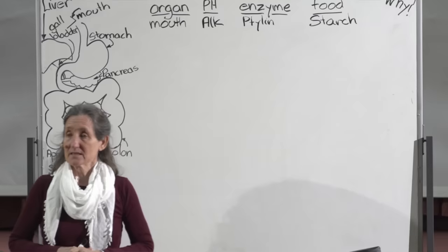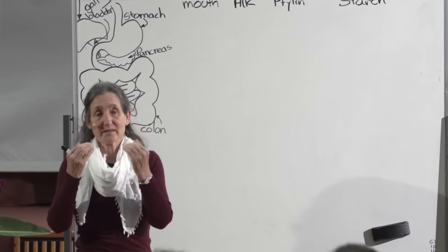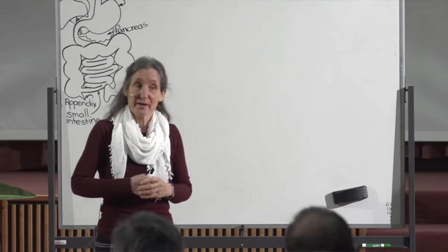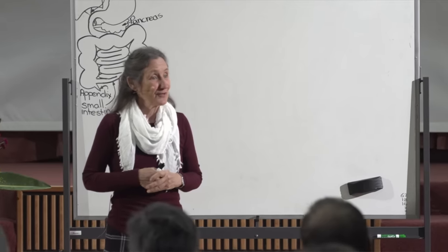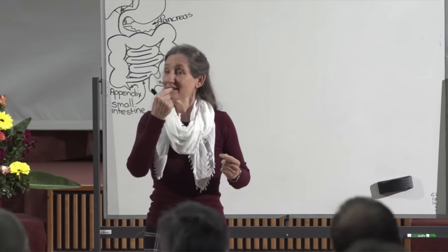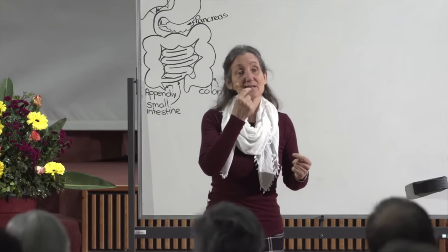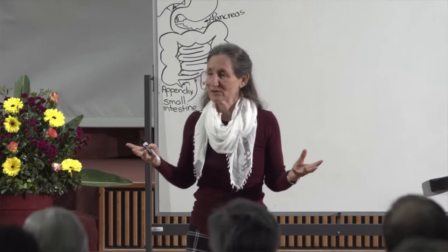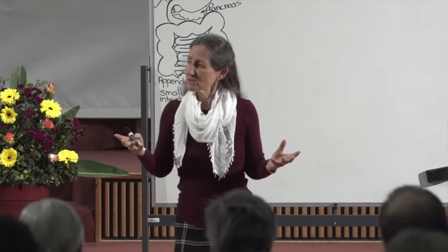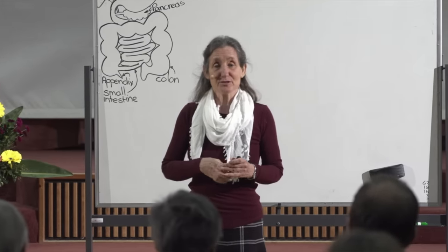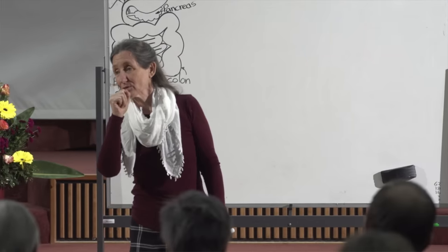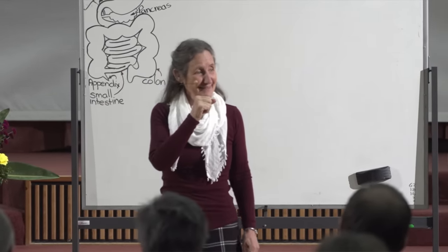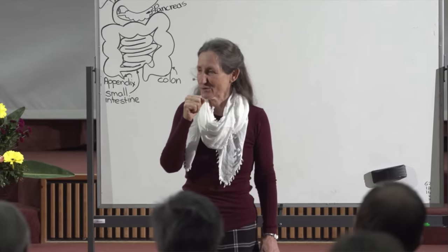Tylin is the salivary amylase that begins the breakdown of starch. There is no Tylin in the mouth of a baby. The first teeth a baby gets — four at the top and four at the bottom — are called milk teeth, because milk is the main food a baby should have. But it's also taste time. This is a good time for baby to suck on a piece of apple, or maybe have little bits of celery or cucumber.